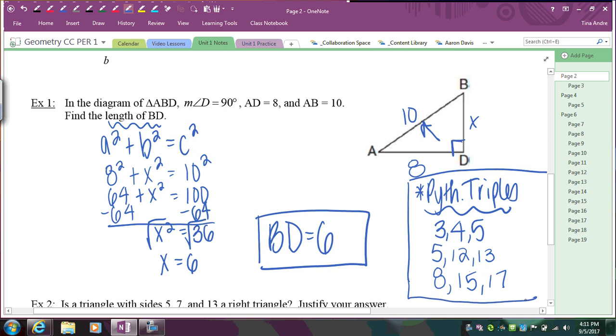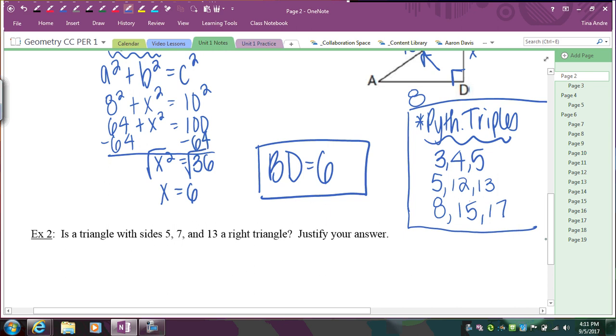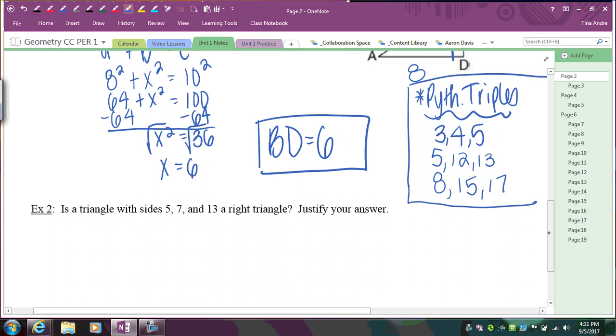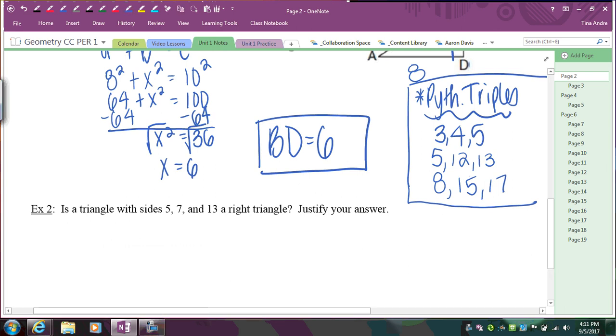So that's just kind of a side note. So what happens if you are trying to decide if three sides form a right triangle and it's not one of these triples, or it's not a multiple of one of these triples? Well, what you can also use is the Pythagorean Theorem. So if you look at example 2, it says, is the triangle of sides 5, 7, 13 a right triangle? So the second use, the second most important use of the Pythagorean Theorem is to determine if you have a right triangle. So remember, the first use is to find a missing side. The second use is to decide if you have a right triangle.